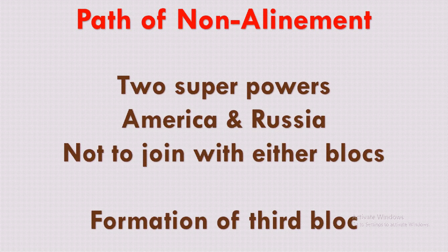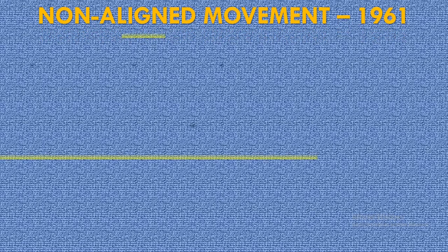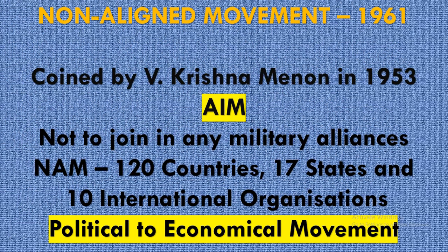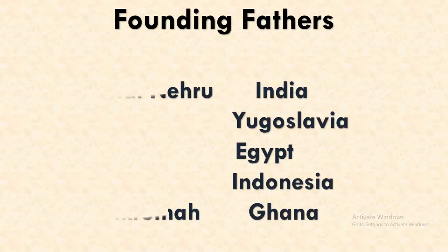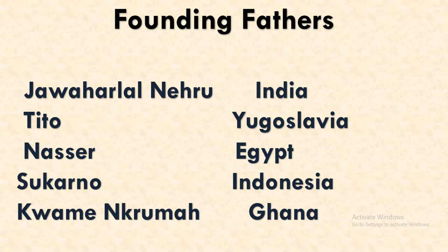We will see in detail what this non-alignment is. The term was coined by V. Krishna Menon in 1953. The aim is not to join any military alliances. According to this aim, 120 countries and 17 states have become members of the Non-Alignment Movement, that is NAM. It also has 10 international organizations and has a political to economical movement with contacts. The founding fathers of NAM were: Jawaharlal Nehru of India, Tito of Yugoslavia, Nasser of Egypt, Sukarno of Indonesia, and Kwame Nkrumah of Ghana.